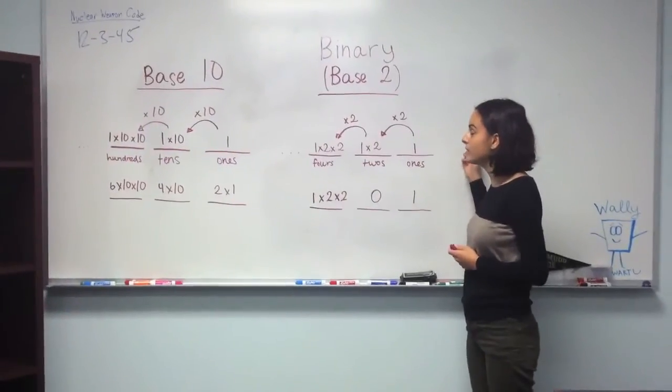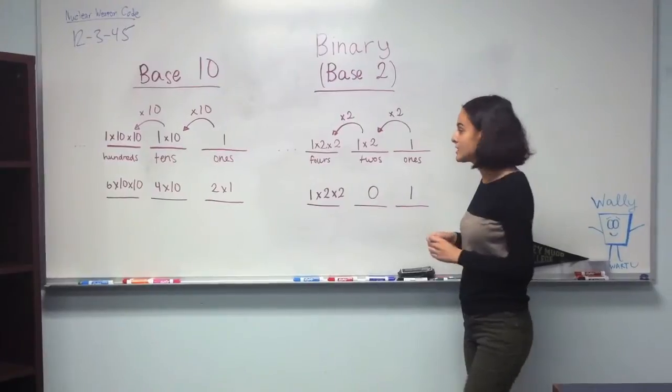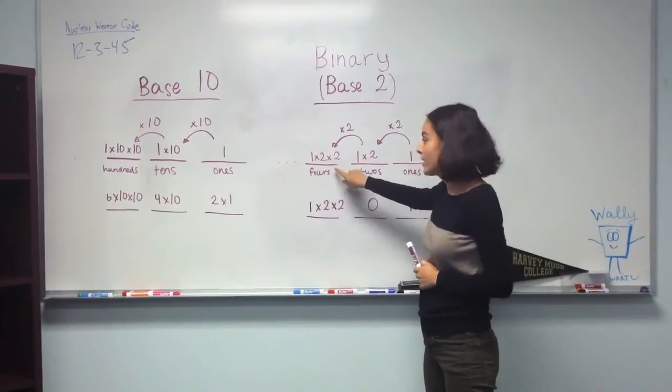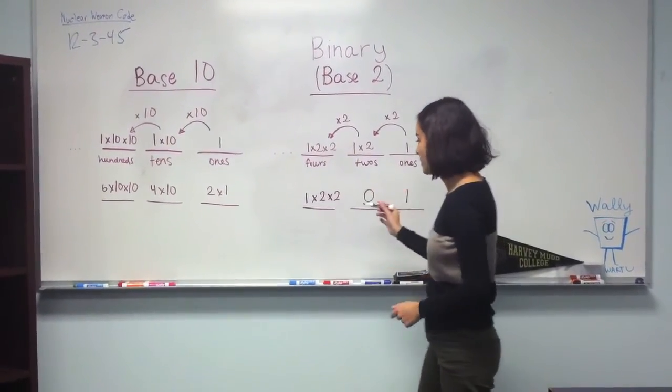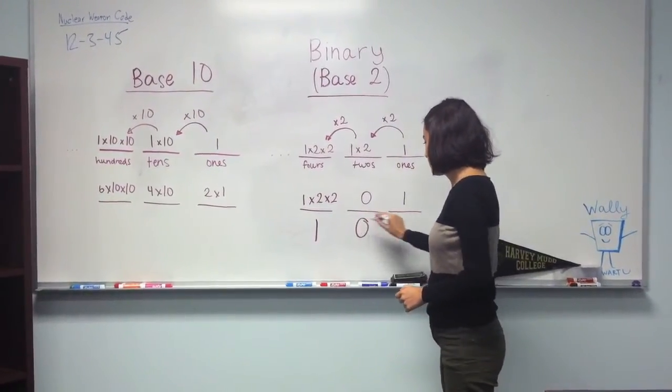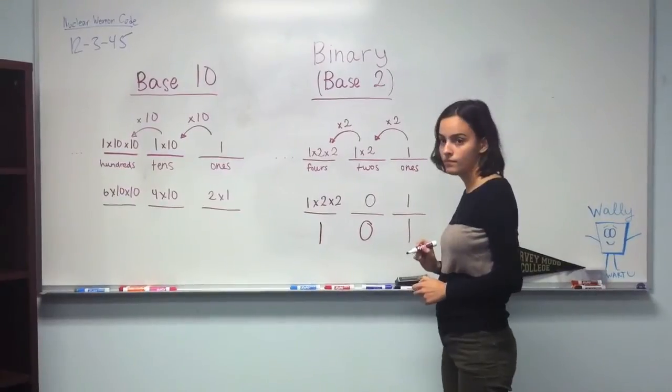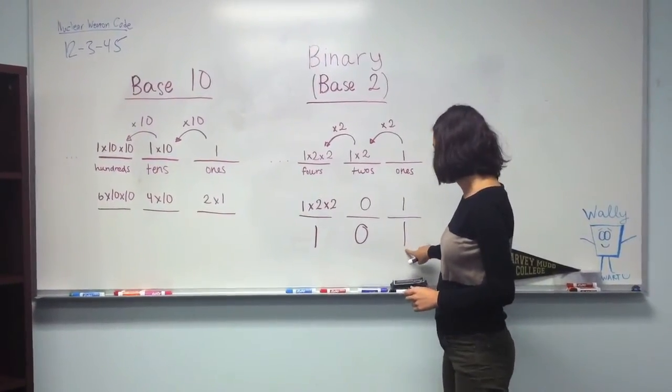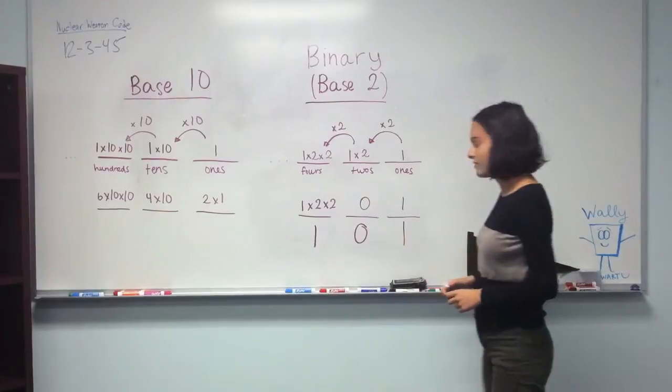Another difference between binary and base 10 is that if you wanted to use a 4, instead of writing a 4 here, you would just write a 1. So you'd write a 1 here, you'd write a 0 here, and you'd write a 1 here. So this number is 1 plus 4, which is 5.